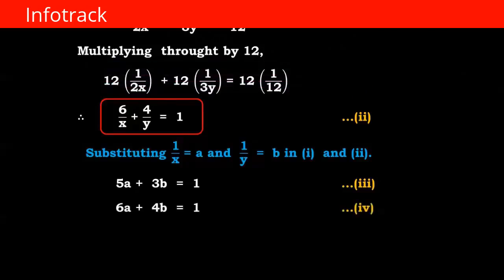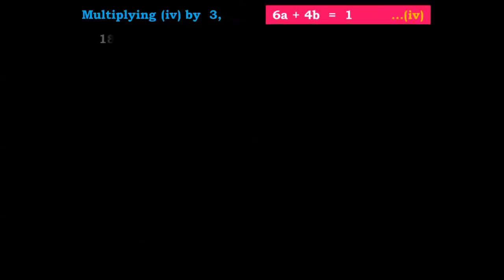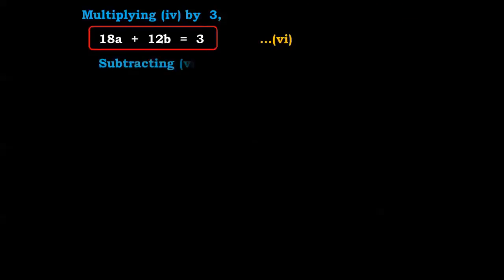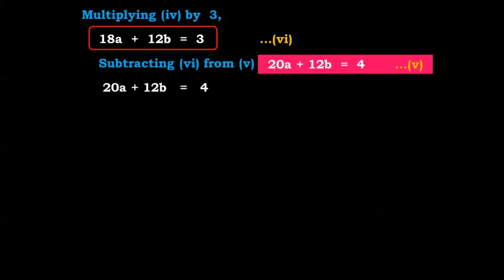Now we have to solve these equations. To do that, first make the coefficients same. Multiply equation 3 by 4 and equation 4 by 3. Multiplying equation 3 by 4 gives 20a plus 12b equals 4 — equation number 5. Multiplying equation 4 by 3 gives 18a plus 12b equals 3 — equation number 6. Now subtracting equation 6 from equation 5.